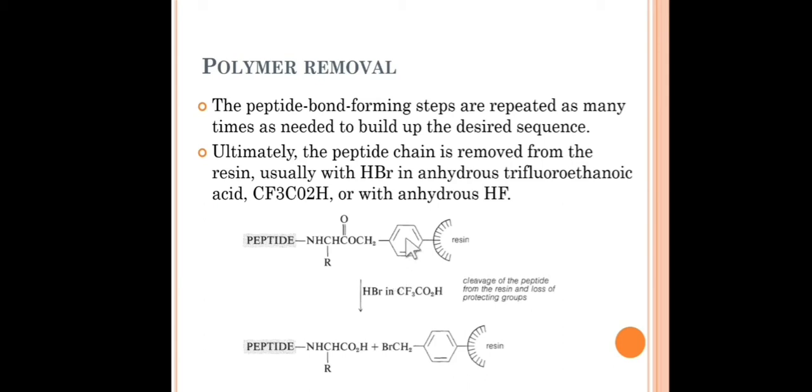Ultimately, the peptide chain is removed from the resin, usually with HBr in anhydrous trifluoroacetic acid, CF3CO2H, or with anhydrous HF. Sometimes this treatment also removes the acid sensitive protecting groups. This is the final step. We get CH2Br and our desired peptide sequence.